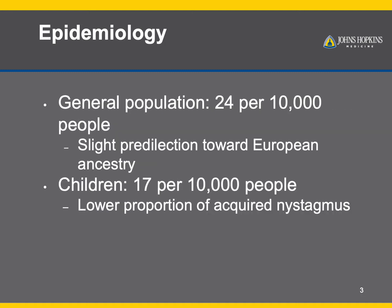In terms of its epidemiology, in the general population, nystagmus can be observed in about 24 per every 10,000 people, with a slight predilection towards people of European ancestry. In children, the incidence is slightly lower at about 17 per every 10,000 children. There is also a lower proportion of acquired nystagmus compared to adults, which is defined as any nystagmus presenting at or after the age of six months.